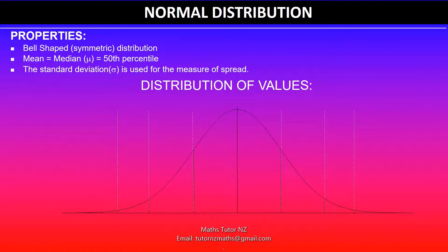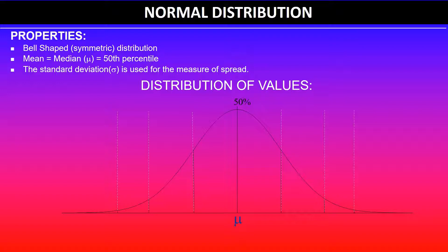In my previous video I've already gone through properties of normal distribution, and here's a quick recap. You already know that it is a bell-shaped curve and it is symmetrical, and the mean and median is the 50th percentile. Standard deviation is the measure of spread, and the mean is at the center with mean plus and minus the first standard deviation on either side.